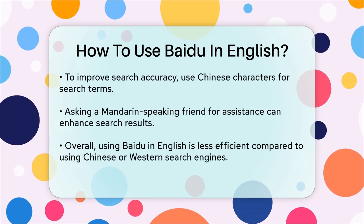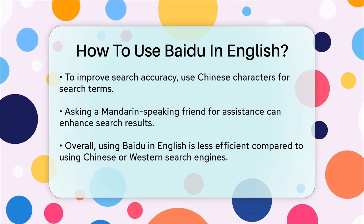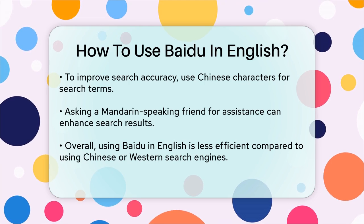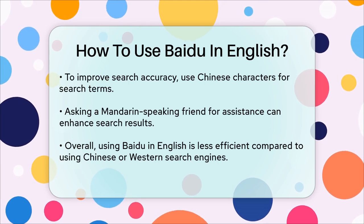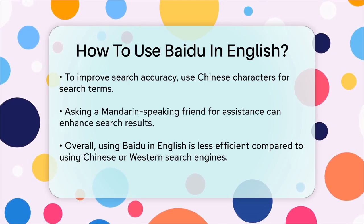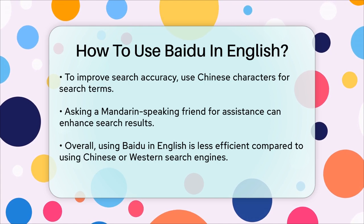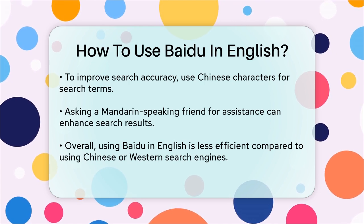To search effectively on Baidu, it's best to use Chinese characters. If you have a friend who speaks Mandarin, they can help you enter search terms in simplified Chinese, which will give you much more accurate results.